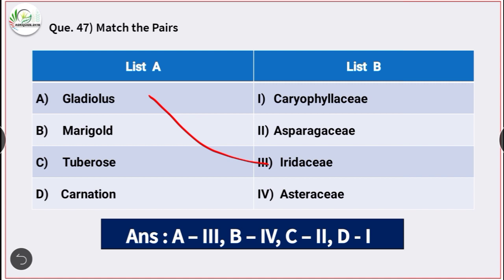Family of marigold is Asteraceae. Family of tuberose is Asparagaceae. And family of carnation is Caryophyllaceae.